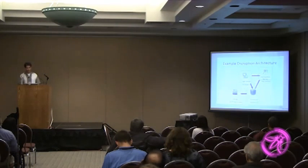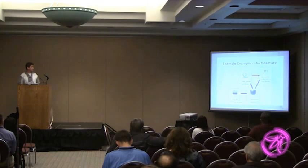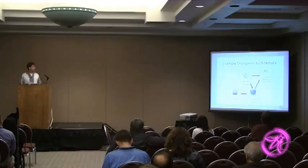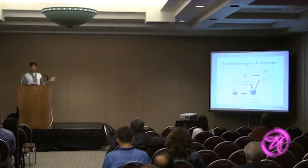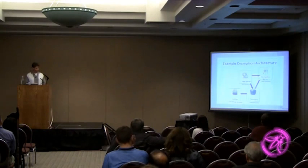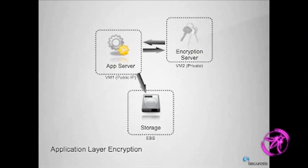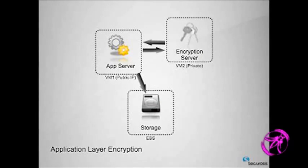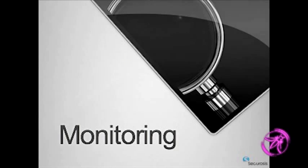Here are a couple of encryption architectures as a review. You can move this stuff around, and how these pieces communicate with one another is purely defined by you. The simple one we normally teach is a private instance for the key server, a public IP for the app server, and storage on the back end — that would be app-layer encryption.